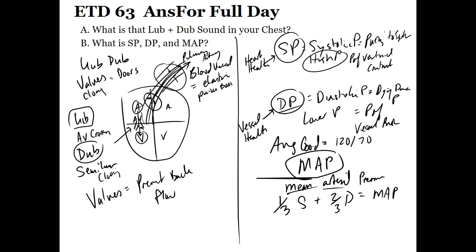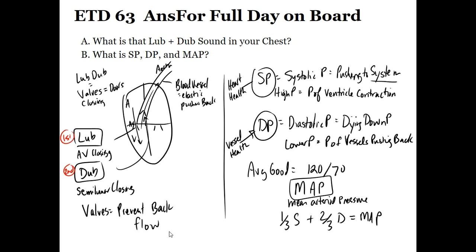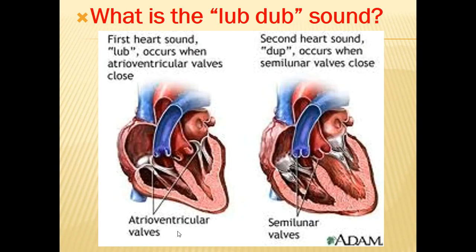You'll also hear about the MAP — mean arterial pressure — which is used in emergency rooms. The formula I like is one-third systolic plus two-thirds diastolic, which gives you your MAP. Anything over 60 is a good sign. It uses two-thirds diastolic because for two-thirds of the heart cycle the ventricle is filling up, and one-third systolic because that's a very short contraction time. The lub-dub sound is the valves: AV valves give the lub when ventricles contract; semilunar valves give the dub.